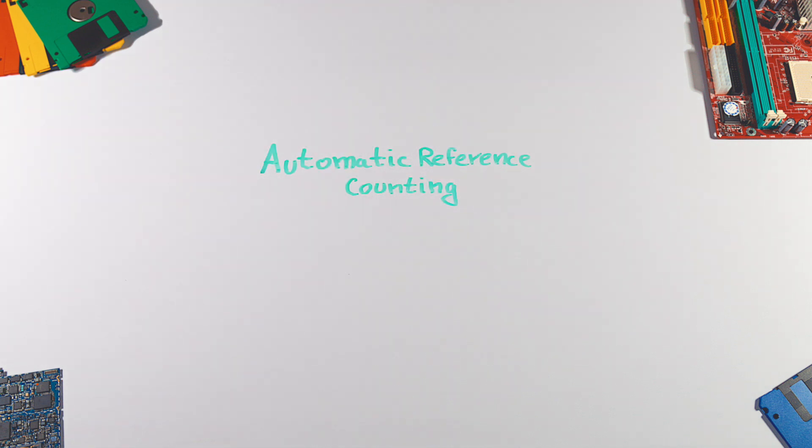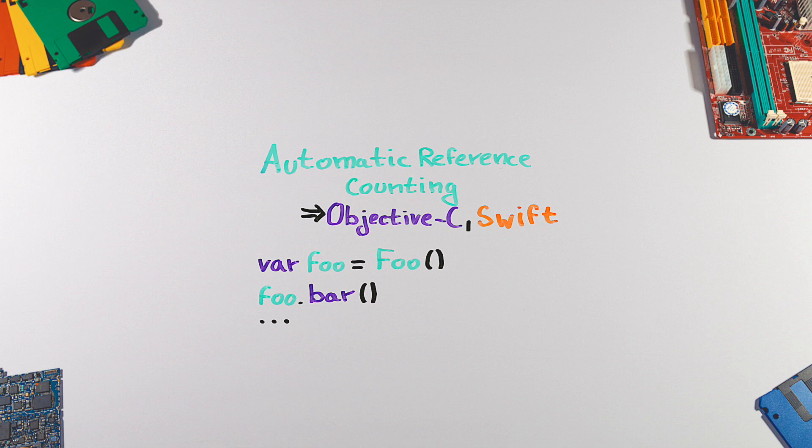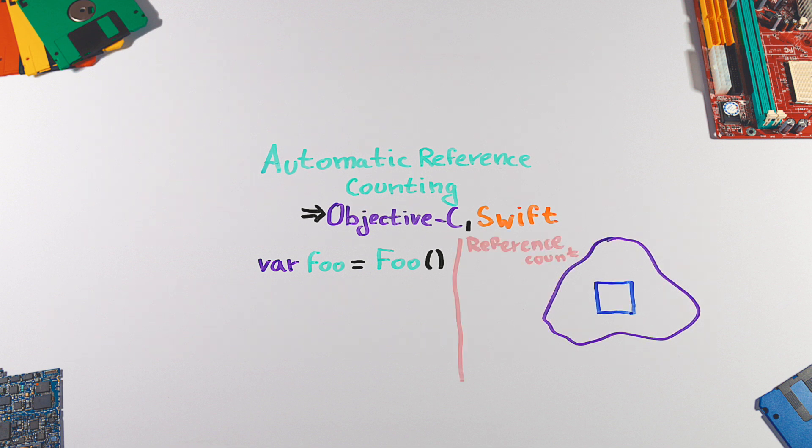Automatic reference counting is used by Objective-C and Swift. Automatic reference counting works as a compiler feature which automatically inserts memory management calls such as retain and release. Those calls increase and decrease the object reference count at runtime. When the reference count reaches zero, the object is removed from the memory.